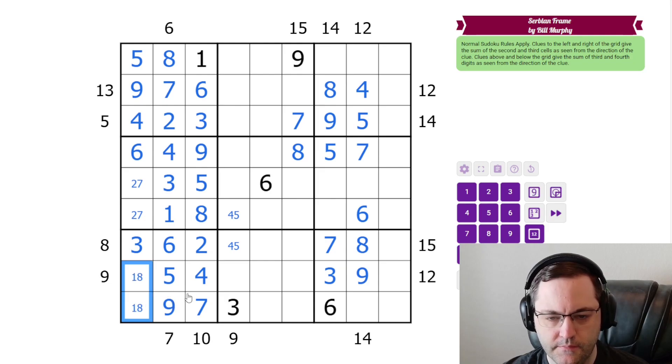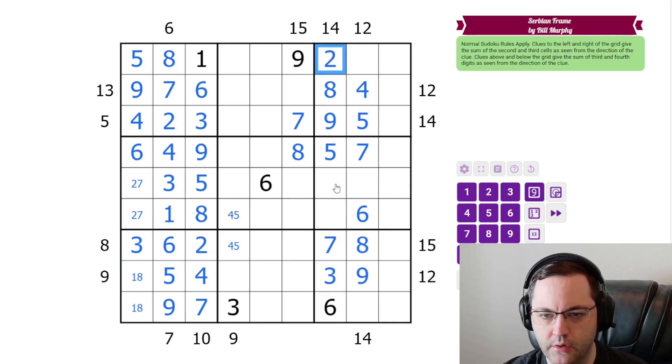These are one and eight. This column is one, two, four. We've got a one and a four here. So this is two.